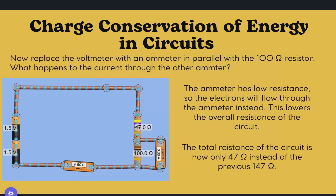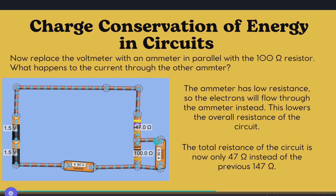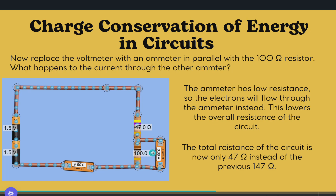If we replace the voltmeter with an ammeter in parallel with the 100 ohm resistor, the ammeter has low resistance, so electrons will flow through the ammeter instead of through the 100 ohm resistor, because it presents less resistance. This lowers the overall resistance of the circuit, so the new resistance is only 47 ohms instead of the previous 147 ohms, because we're no longer including the 100 ohm resistor.